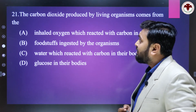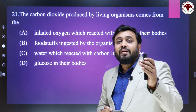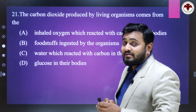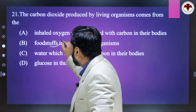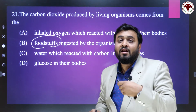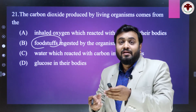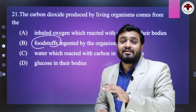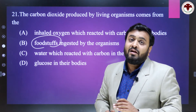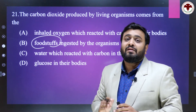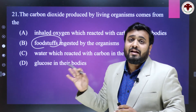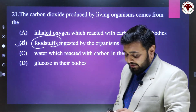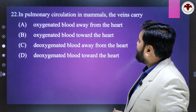The carbon dioxide produced by living organisms comes from? Carbon dioxide is the end product of aerobic respiration occurring in our cells. The substrate for cellular respiration is foodstuff — food is digested from complex to simple form, absorbed into the blood, enters the cell, and cellular respiration produces ATP and carbon dioxide released from the foodstuff. So the right answer is B — foodstuff ingested by the organism.